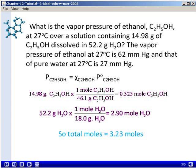To find the mole fraction of ethanol, we need to first find the total number of moles present in solution. So we will add together 0.325 moles of ethanol and 2.90 moles of water. This gives us a total number of moles of 3.23.